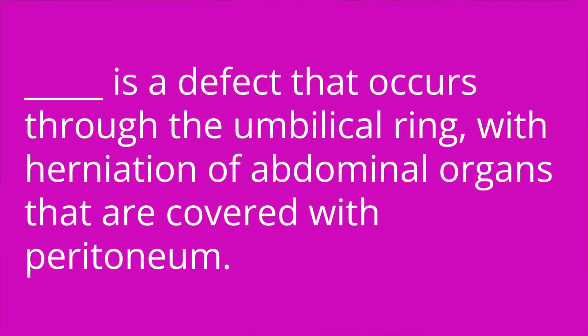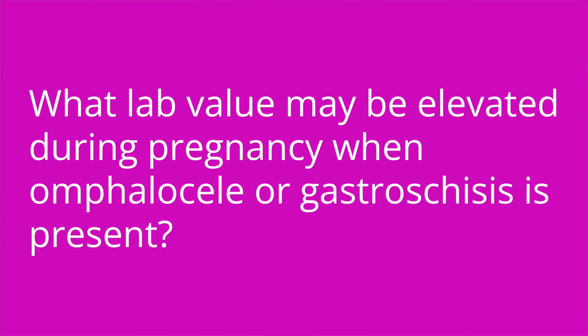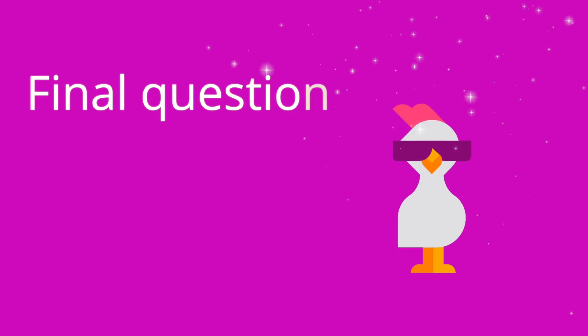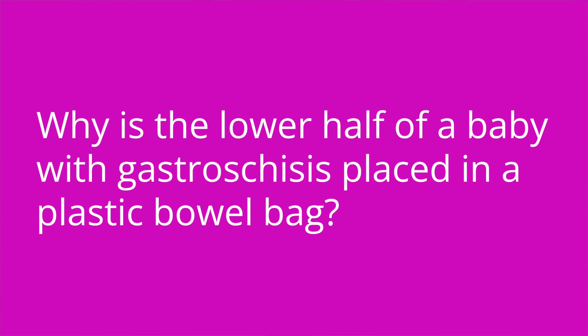It's quiz time — three questions for you. Question one: blank is a defect that occurs through the umbilical ring with herniation of abdominal organs that are covered with peritoneum. The answer is omphalocele. Question two: what lab value may be elevated during pregnancy when omphalocele or gastroschisis is present? The answer is MSAFP. Question three: why is the lower half of a baby with gastroschisis placed in a plastic bowel bag? The answer is to provide protection and decrease heat and moisture loss.